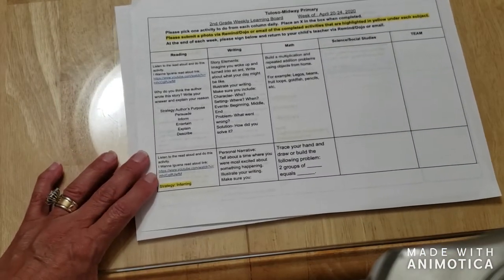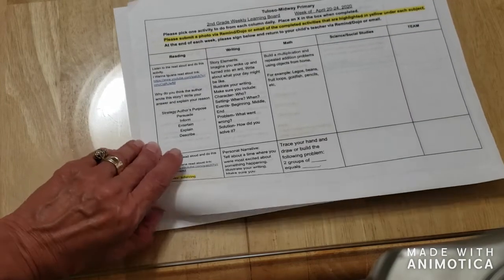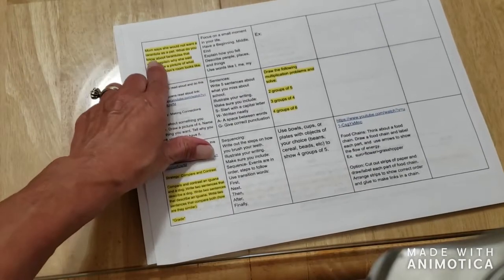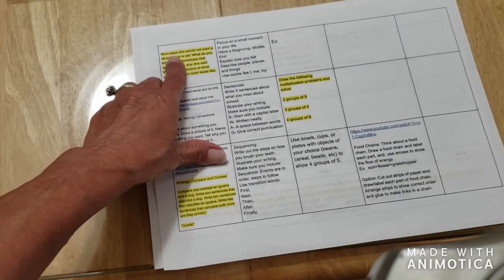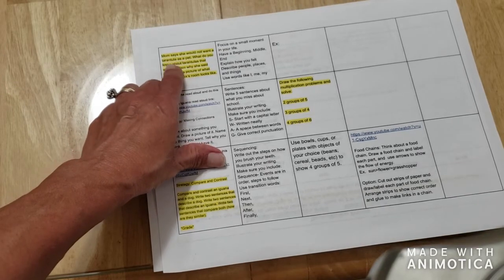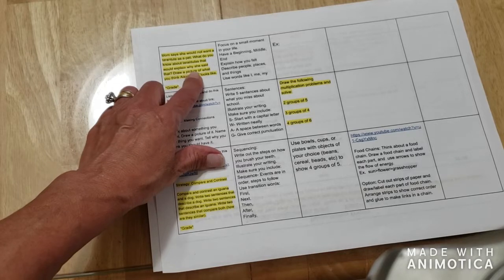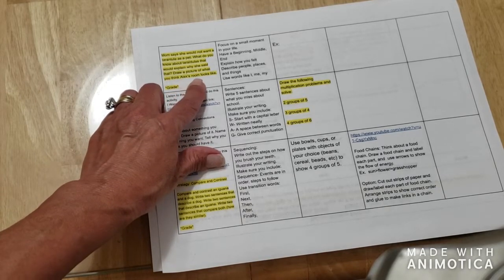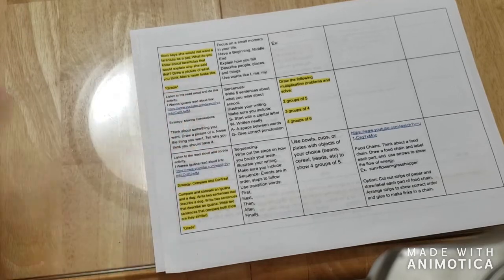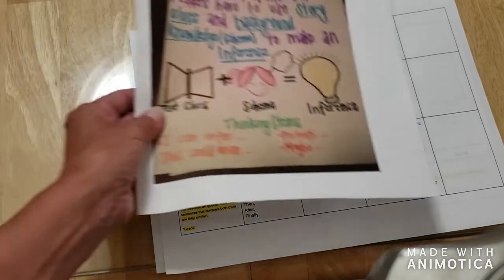The next reading activity is going to have you re-listen to the 'Iwana Iguana' read aloud, and this time we're going to be inferring. You're going to respond on a piece of paper to this question: Mom says she would not want a tarantula as a pet — what do you know about tarantulas that would explain why she said that? You also need to draw a picture of what you think Alex's room looks like. This one will be turned in for a grade, so remember anything in yellow is for a grade.